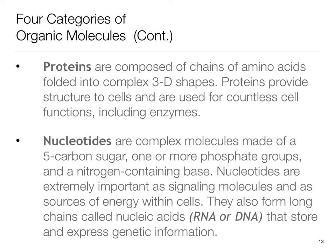Nucleotides are complex molecules made up of a five-carbon sugar — ribose or deoxyribose — one or more phosphate groups, and an organic nitrogen-containing base. Nucleotides are extremely important as signaling molecules, carrying information between cells, tissues, and organs, and as sources of energy within cells. They also form long chains called ribonucleic acid, RNA, or deoxyribonucleic acid, DNA, that are essential for storing and expressing genetic information.